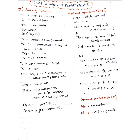To summarize N staging: N1 is mobile ipsilateral axillary lymph nodes (level 1 and 2); N2a is fixed or matted ipsilateral axillary nodes; N2b is ipsilateral internal mammary nodes; N3a is infraclavicular (level 3) nodes; N3b is both axillary and internal mammary nodes; N3c is supraclavicular nodes, plus or minus axillary or internal mammary involvement.